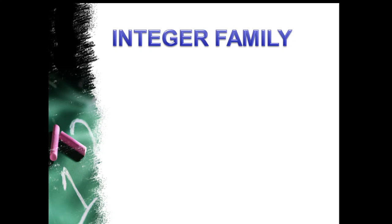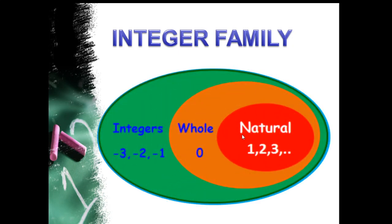Let's look at the integer family. You all live with your family members. If I take a family of mother, father, and a child — that's the smallest, neutral family. If I include grandparents, it becomes bigger. And if I include relatives — uncle, auntie, brother, sister, niece, nephew — it becomes a joint family. Similarly, in the integer family: the smallest part is natural numbers. When extended with 0, we get whole numbers — a bigger set. When we include whole numbers, natural numbers, and negative numbers together, the entire family is called the integer family.